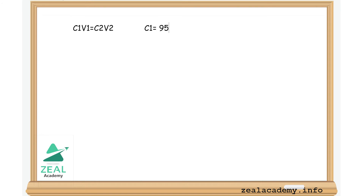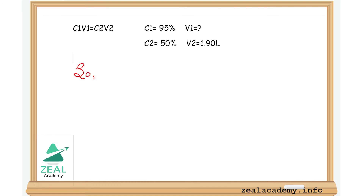We have the equation C1V1 = C2V2, in which C is the concentration and V is the volume respectively. We have C1 as 95%, V1 as unknown, C2 as 50%, and V2 as 1.90 liters. When we substitute the given values into the equation,